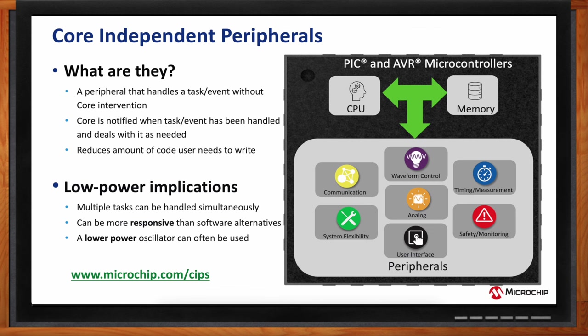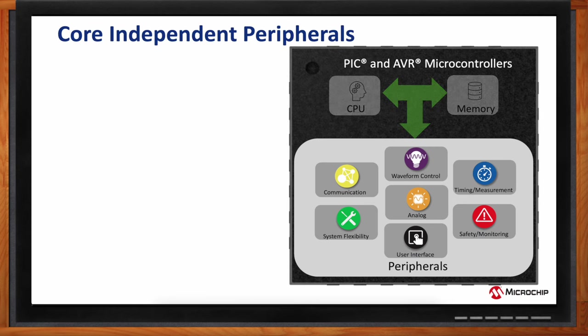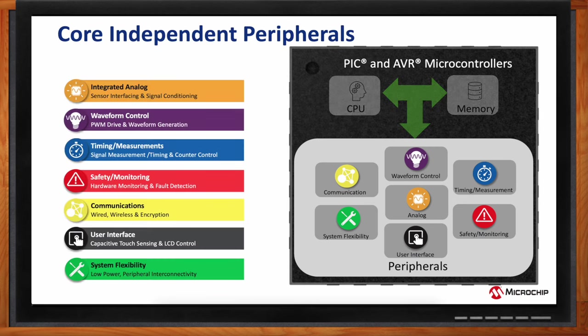The peripheral capabilities are organized into categories to make it easier to understand what each peripheral does, since some of them will be new. The categories are: integrated analog, waveform control, timing and measurement, safety and monitoring, communication, user interface, and system flexibility.